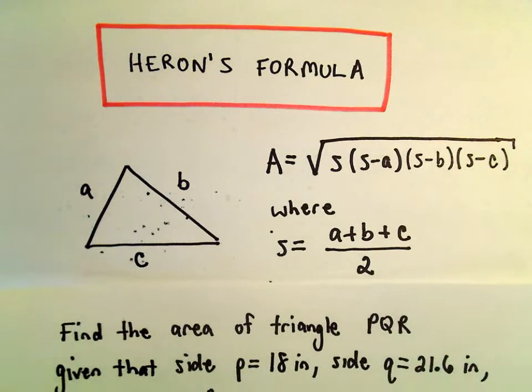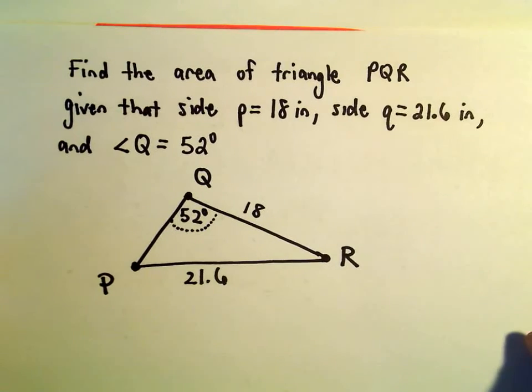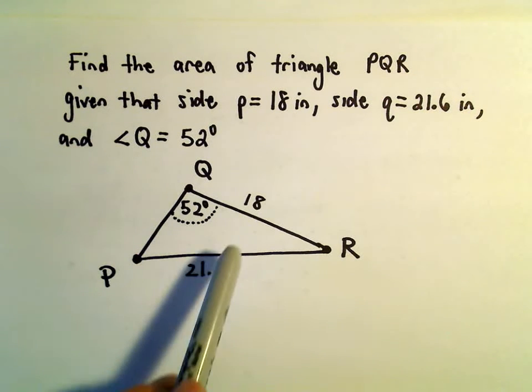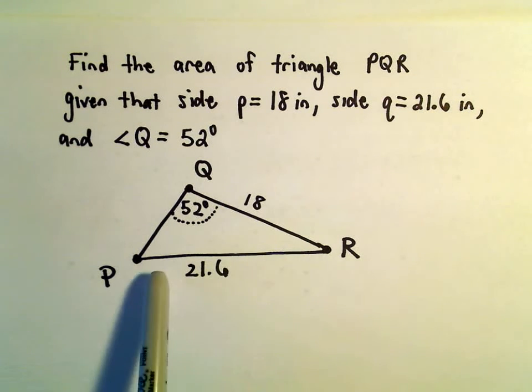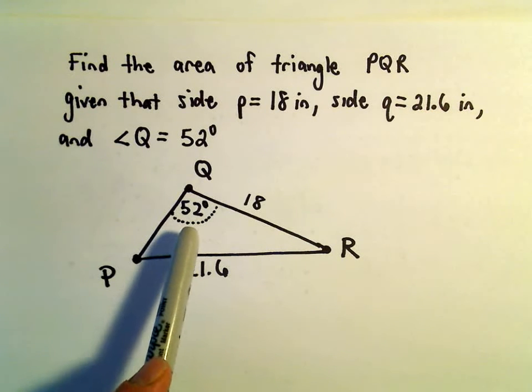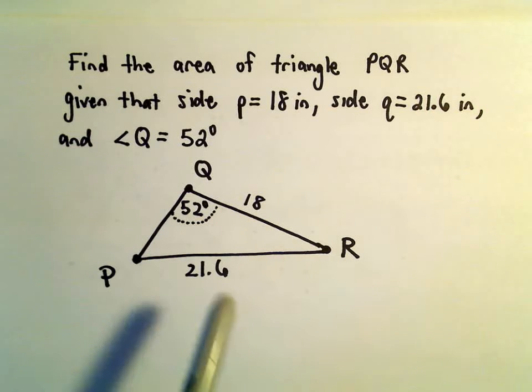Alright, so in this video we're going to do one more example using Heron's formula. We're going to find the area of triangle PQR given that side p has length 18 inches, side q has length 21.6 inches, and angle Q is 52 degrees.